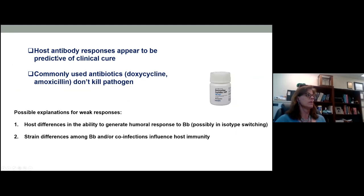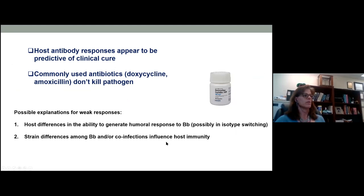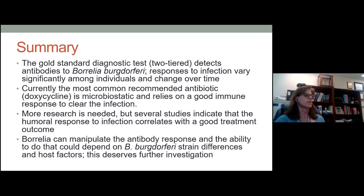Host antibody responses appear to be predictive of clinical cure, and the commonly used antibiotics — especially doxycycline — don't kill the pathogen directly. Some possible explanations for weak responses include host differences in the ability to generate humoral responses to Borrelia, possibly involving isotype switching, strain differences among Borrelia, and co-infections that could influence host immunity. In summary, the gold standard diagnostic test detects antibodies to Borrelia burgdorferi; responses vary significantly among individuals and change over time. The most common recommended antibiotic is bacteriostatic and relies on a good immune response. Several studies indicate the humoral response to infection correlates with good treatment outcome, and Borrelia's ability to manipulate the antibody response may depend on strain differences and host factors.